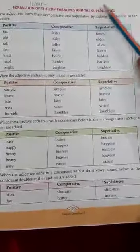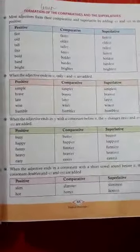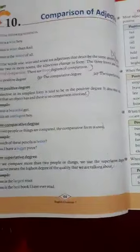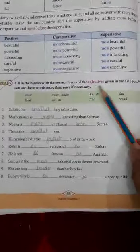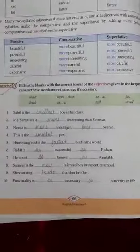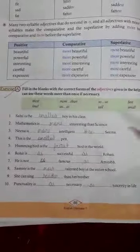The formation of comparatives and superlatives is given here — you have to read it by yourself. Exercise A: fill in the blanks with the correct forms of the adjectives given in the help box. You can use these words more than once if necessary. Use the degrees given in brackets in the sentences.